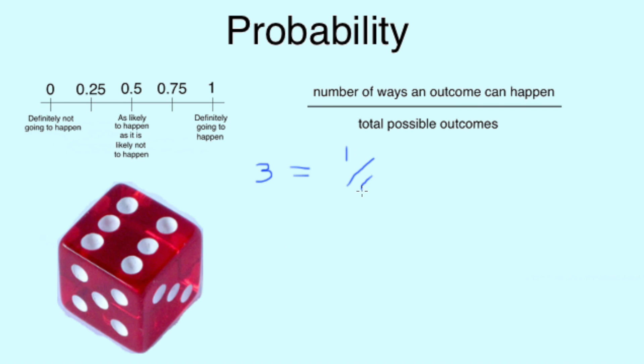However the total possible outcomes are 6 because there are 6 faces each with a different number on a regular dice. If we divide 1 by 6 we get roughly 0.17 when rounded up. And on our scale of 0 to 1 that makes it unlikely.